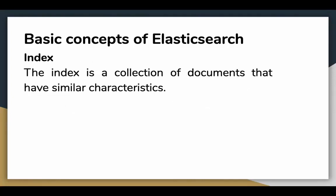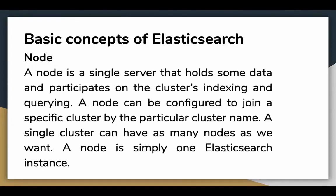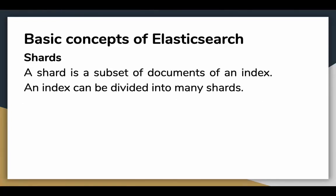Next is the index - a collection of documents that have similar characteristics. Next comes node - a single server that holds some data and participates in cluster indexing and querying. A node can be configured to join a specific cluster by the cluster name. A single cluster can have as many nodes as we want. A node is simply one Elasticsearch instance.